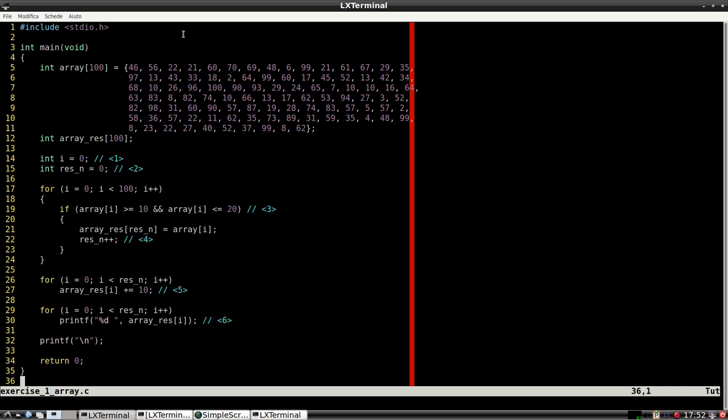At line 19, we find the filter we've discussed earlier. At line 22, once we've found an element that passes the filter, we need to update res_n for the next number to be placed in the array.